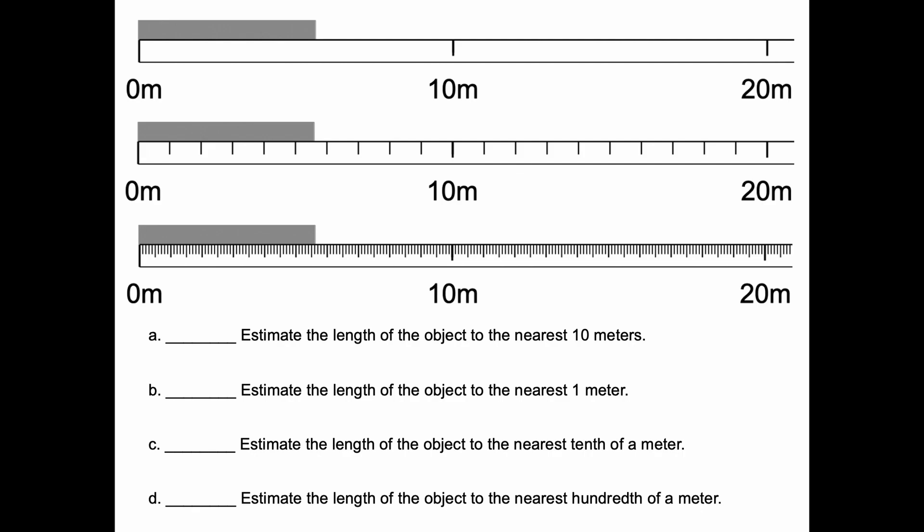Question A says, estimate the length of this object to the nearest ten meters. Once again, the choices are zero, ten, and twenty. If we look at the edge of the object, it looks to me like it's closer to ten than zero. So, for that reason, I'm going to give an answer of ten meters for A.